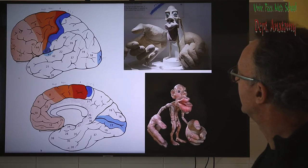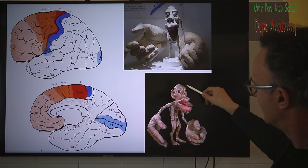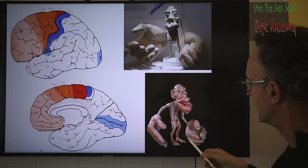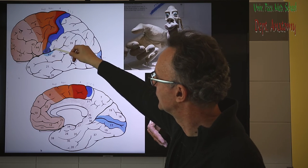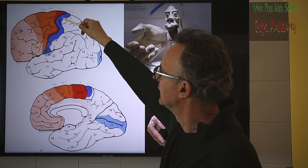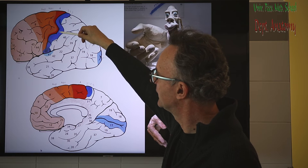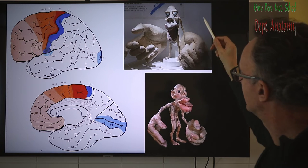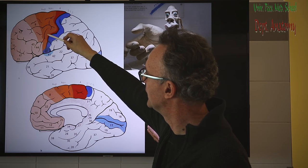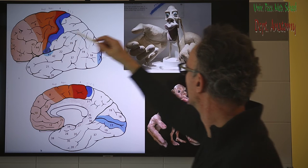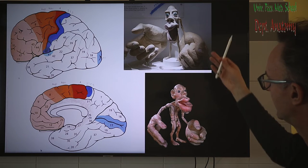Going back to the sensory homunculus — if we turn it upside down, the head would be at the bottom, then the hand, neck, upper limb, trunk, and lower limb. In the motor homunculus, what is special is that after the head we have immediately the upper limb with the hand, and then the neck and trunk — this is the only difference between the two representations.